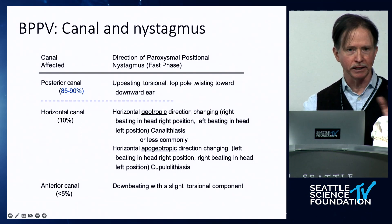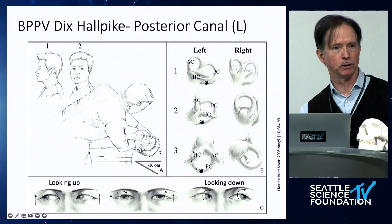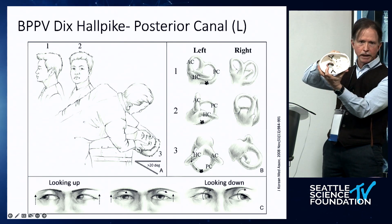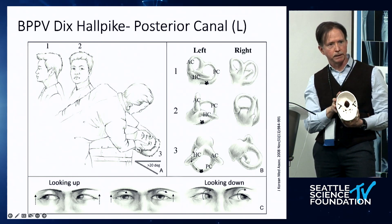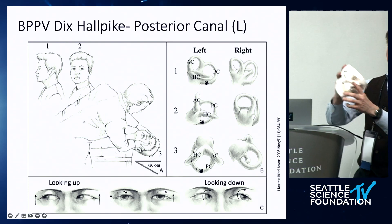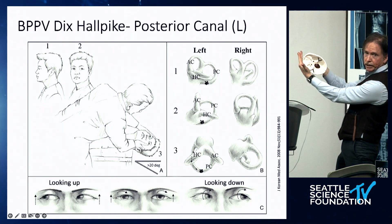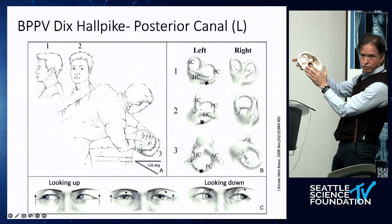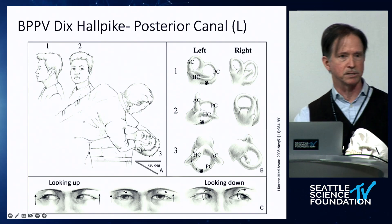Most BPPV involves the posterior canal. Thinking about canal orientation: you put the head at 45 degrees to place the posterior canal in the vertical plane. When you flip the patient back, the canal becomes horizontal so debris floats through; when you sit them back up it moves back away from the posterior canal. The direction of nystagmus depends on where the eyes are in the orbit relative to the canal plane — if they look toward their nose, eye movement is more vertical; if they look downward (90 degrees to the posterior canal), movement is more torsional. If those characteristic findings are absent, it's more suspicious for something other than BPPV.